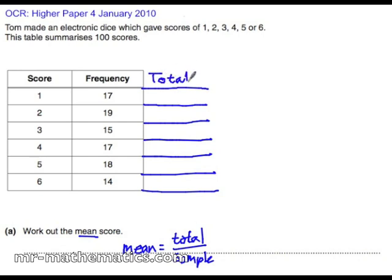first of all you have got 1 multiplied by 17, so there is another total of 17 score here and then 2 times 19 has a total score of 38. 3 times 15 is 45,